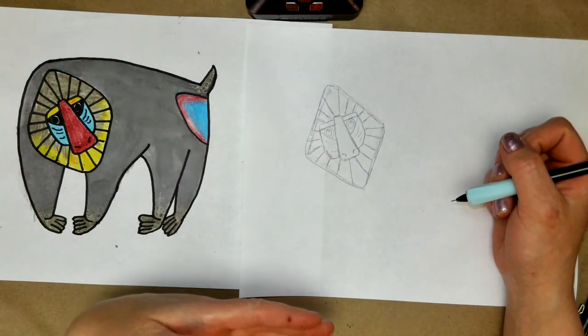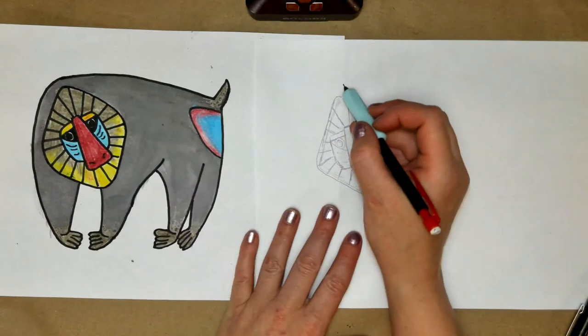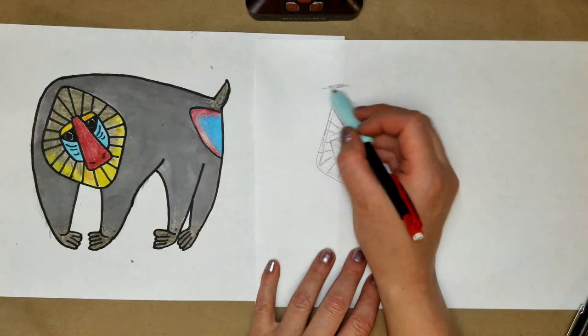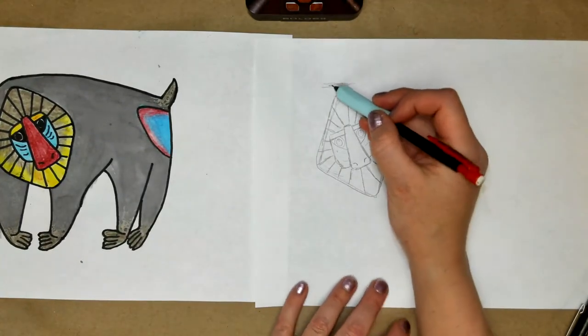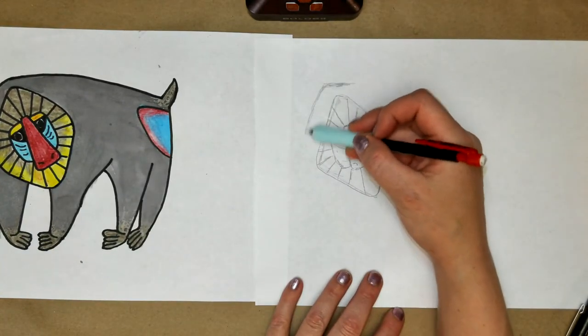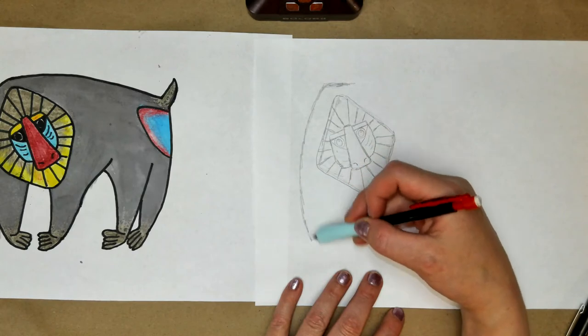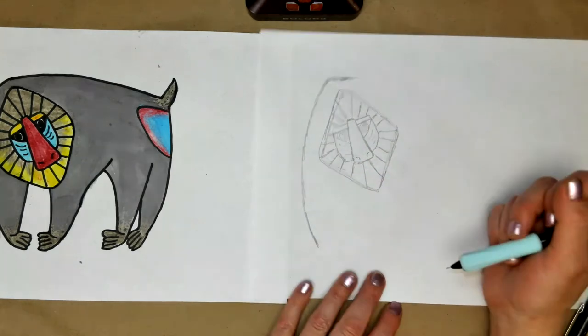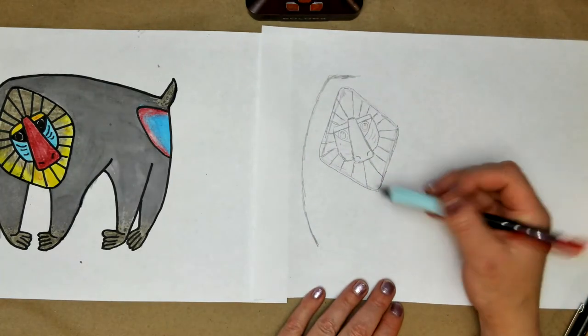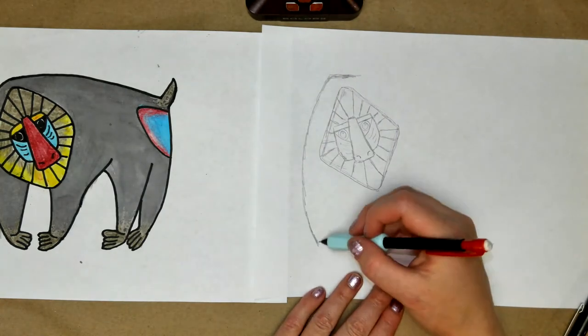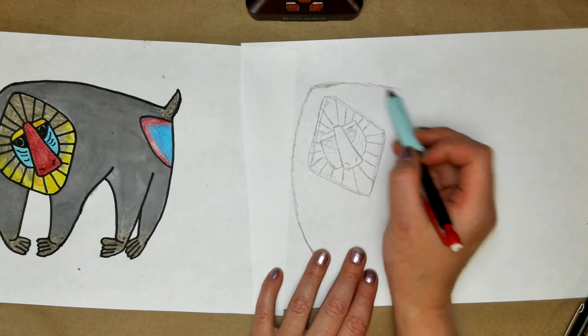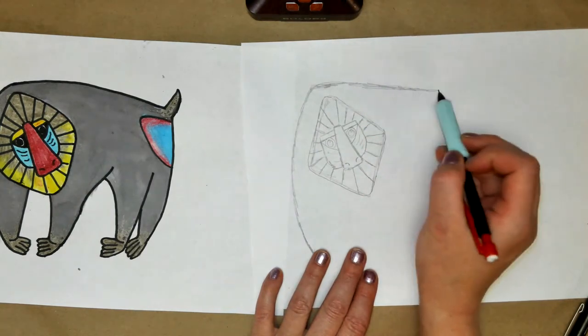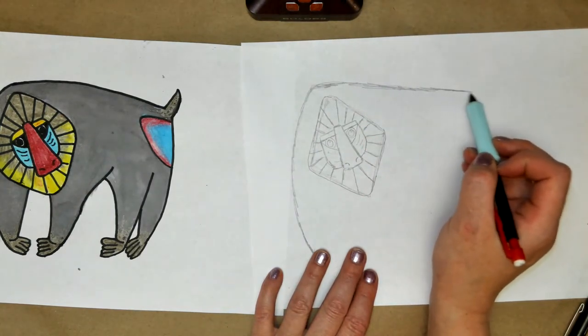Now they tend to walk in kind of a hunched over fashion, so what we're going to do is come above his head, draw a little line so we get that straight part, and then we're going to curve ever so slightly as we come down below that diamond.